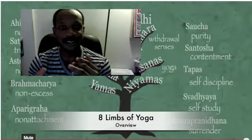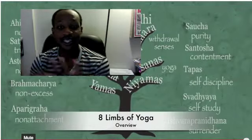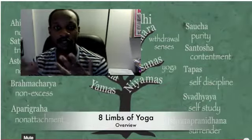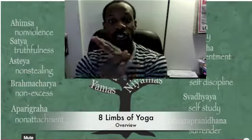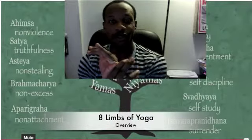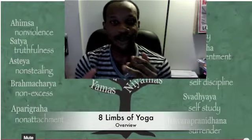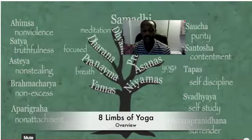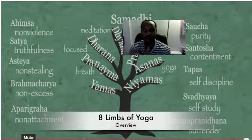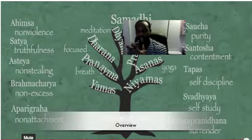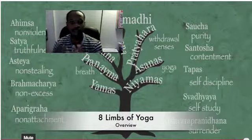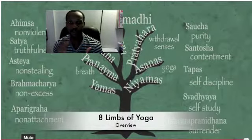Those eight limbs are the Niyamas, the personal disciplines; the Yamas, which are the social disciplines; the Asanas, the yoga postures and poses; and Pranayama, which is breathing — moving prana around.